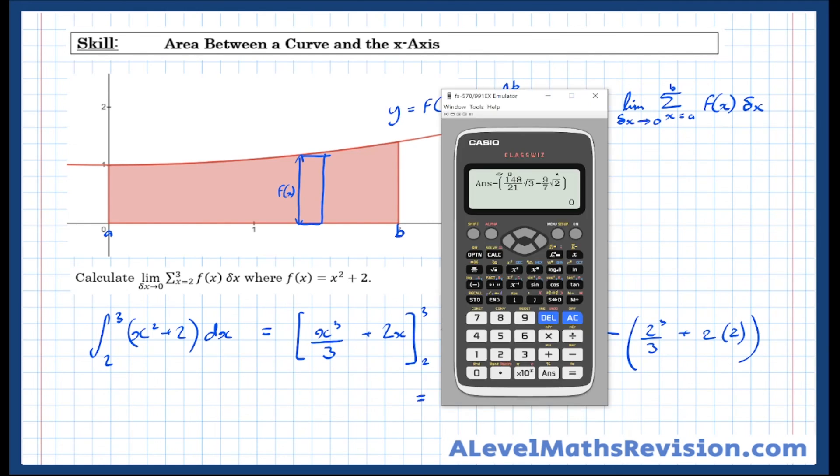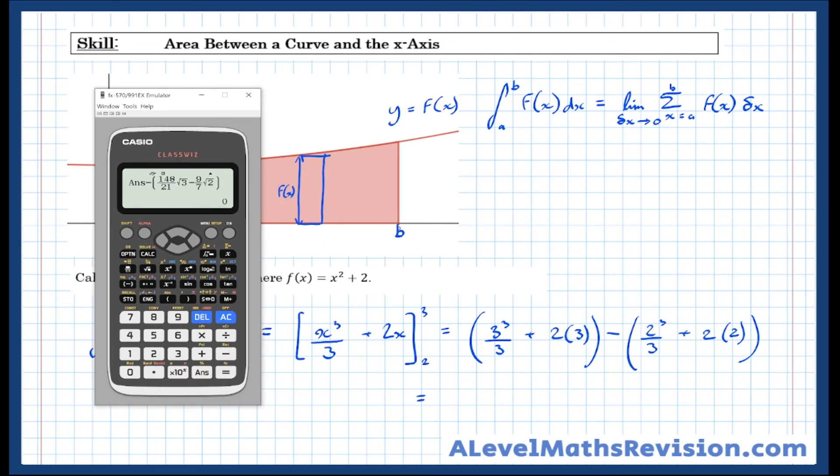Which is equal to, let's put that in the calculator: 3 cubed over 3 plus 2 lots of 3 take all of 2 cubed over 3 plus 2 lots of 2.